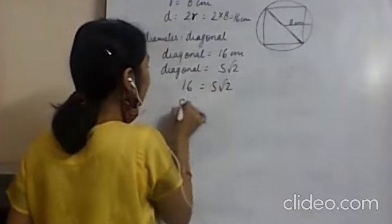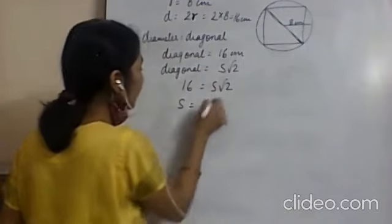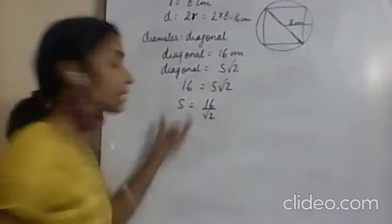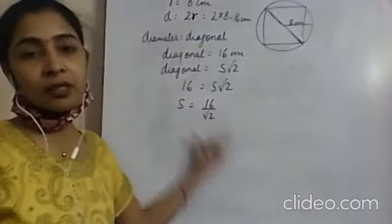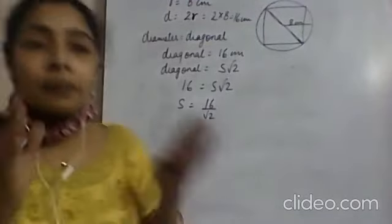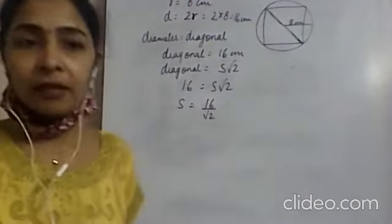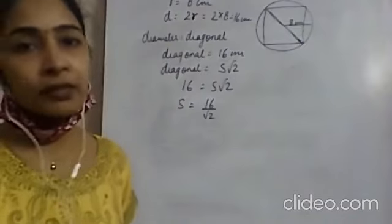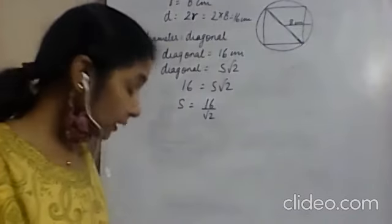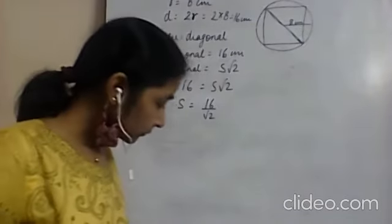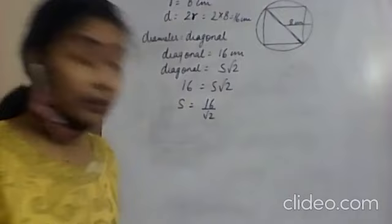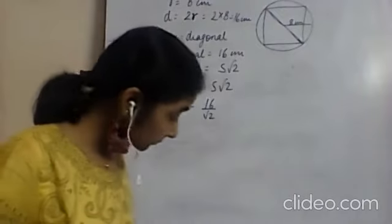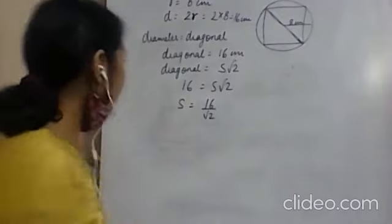We have the formula: diagonal equals side times √2. So 16 equals side times √2, meaning side equals 16 upon √2. Now that we know the side, we can find the area of the square: area equals side squared.